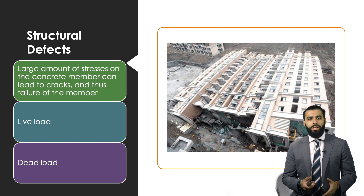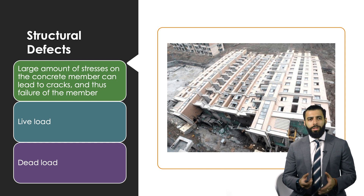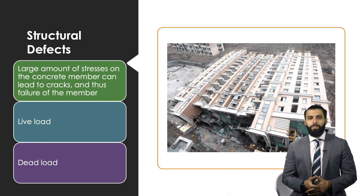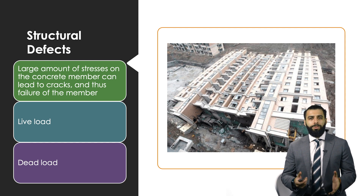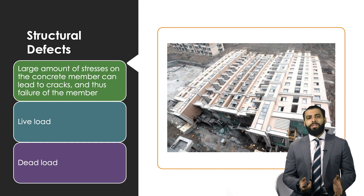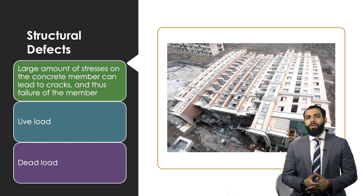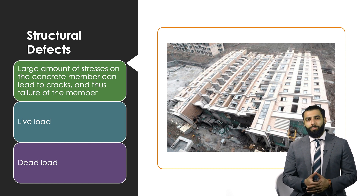A live load on a structure is any load that is not fixed — for example, people that move around on a given floor. For instance, if you're considering a slab, that would be considered a live load. A dead load is the self-weight of the slab itself.